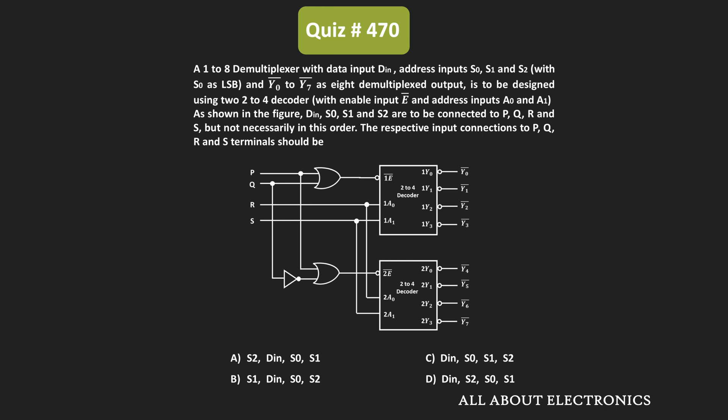In this question, a 1-to-8 demultiplexer has been designed using this circuit. As given in the question, DIN is the input to this demultiplexer, while S0, S1, and S2 are the selection inputs. This circuit consists of decoders and a few logic gates. For this circuit to work as a 1-to-8 demultiplexer, we have been asked to find what inputs we need to apply at the P, Q, R, and S terminals.